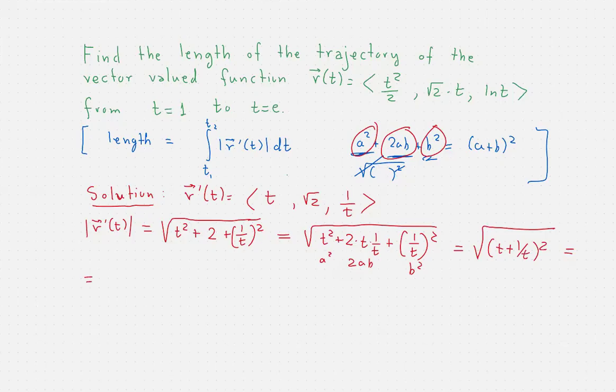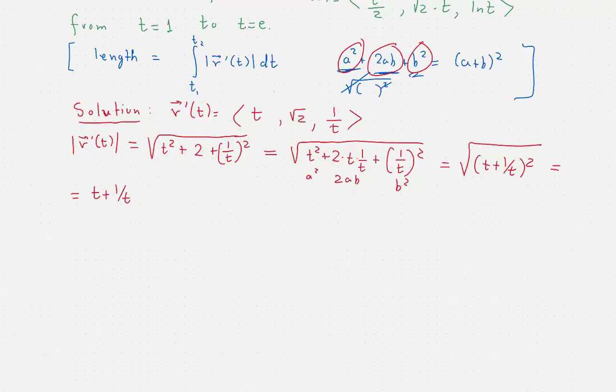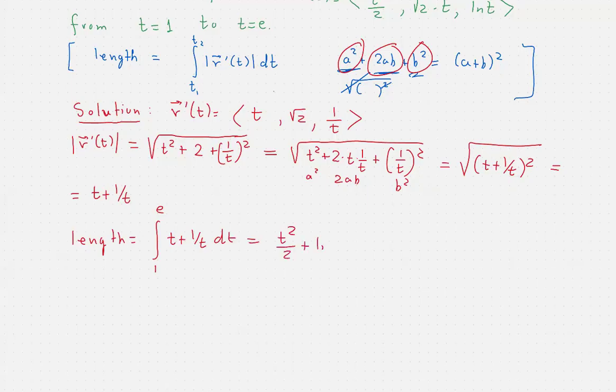So the length that we're looking for is the integral from 1 to e of t plus 1 over t, which is t squared over 2 plus ln of t. You might expect here a ln of absolute value, but note that the interval of integration is in positive range, and there's no need for the absolute value. That's why it's being omitted.